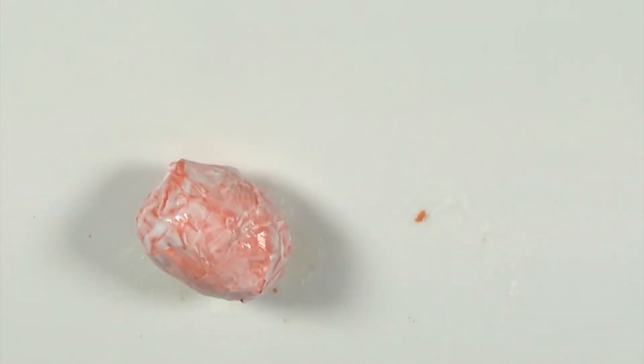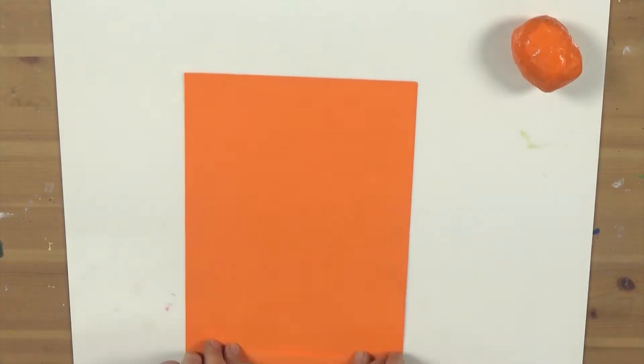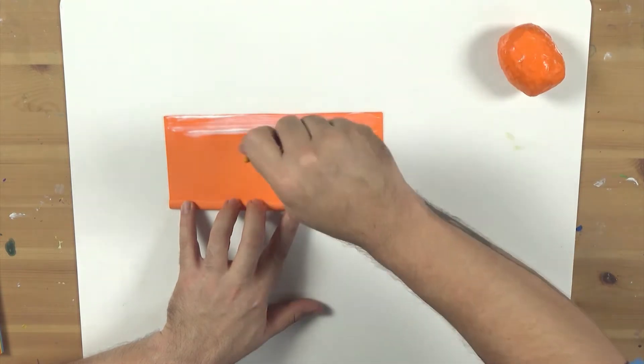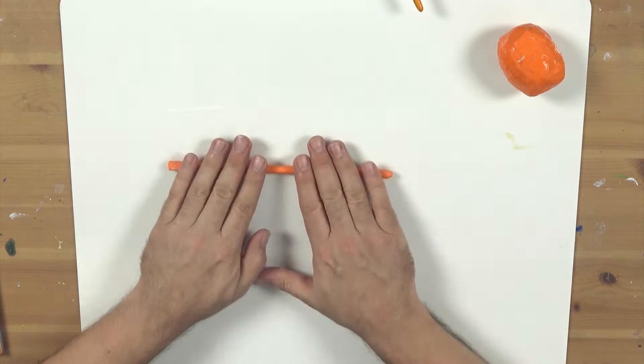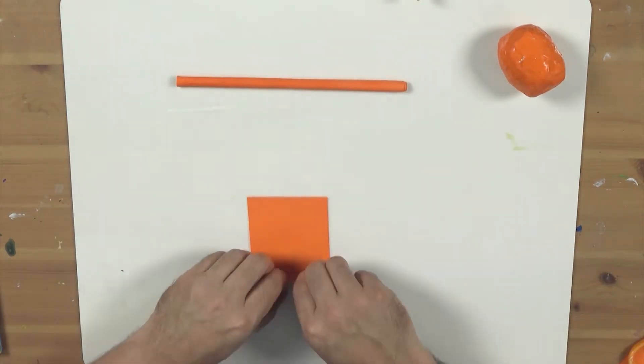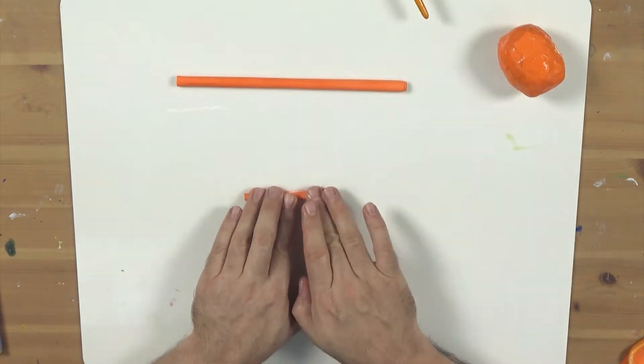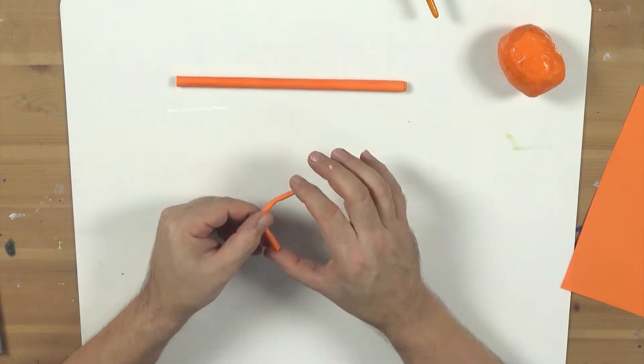For the legs, I roll up a full sheet of paper as tightly as I can and apply glue to the edge of the sheet and finish the roll. I then let this dry. I then create a smaller roll from a quarter of a sheet, glue the edge, finish off the roll and put a gentle curve in it, and then let that dry.